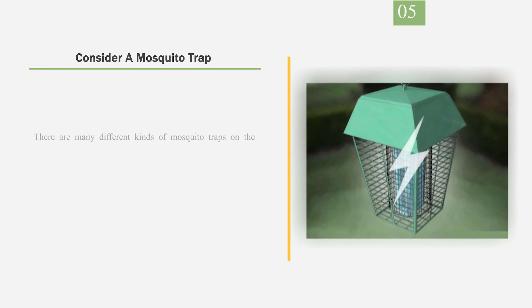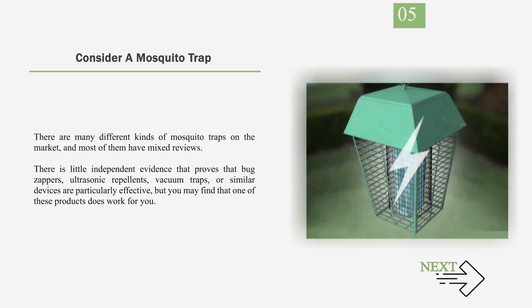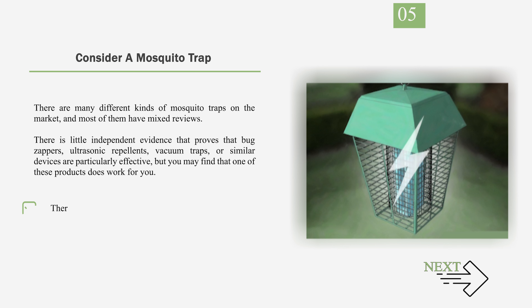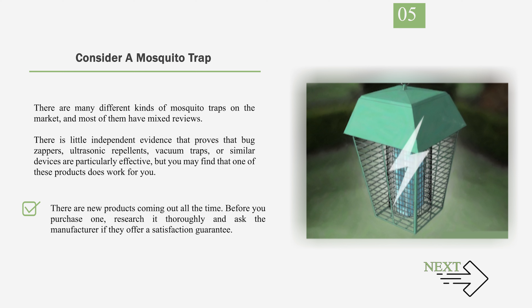Number 5: Consider a mosquito trap. There are many different kinds of mosquito traps on the market, and most of them have mixed reviews. There is little independent evidence that proves that bug zappers, ultrasonic repellents, vacuum traps, or similar devices are particularly effective, but you may find that one of these products works for you. Before you purchase one, research it thoroughly and ask the manufacturer if they offer a satisfaction guarantee.